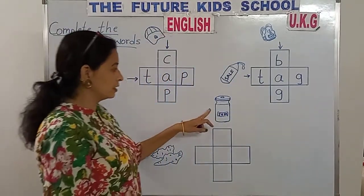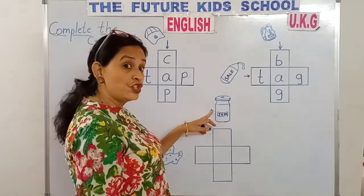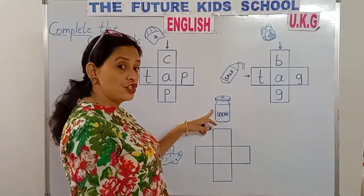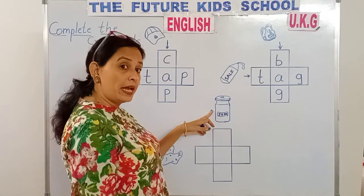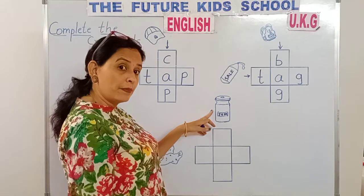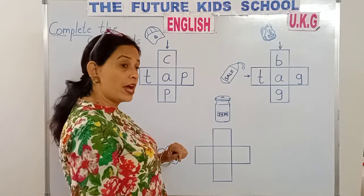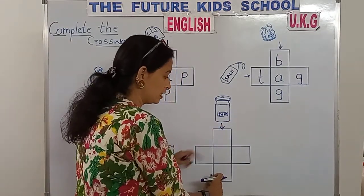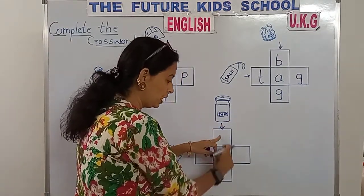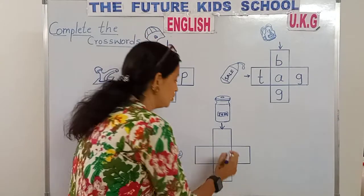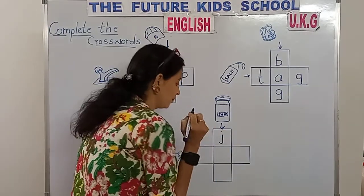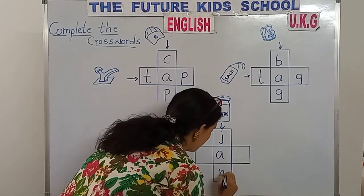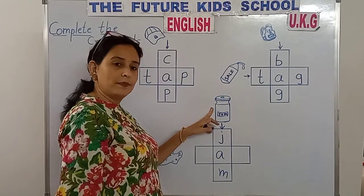Look here, children. This is jam. J-A-M spells jam. See, the arrow is pointing this side, children. So write the word this side. J-A-M. Jam.